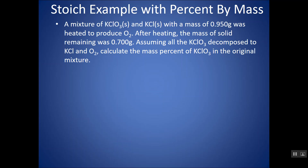Take a moment, try this problem, and then you can check your work. A mixture of KClO3 (potassium chlorate) and potassium chloride has a mass of 0.950 grams, and it was heated to produce O2. After heating, the mass of the solid was 0.70 grams. Assuming all the KClO3 decomposed, calculate the mass percent of KClO3 in the original mixture.